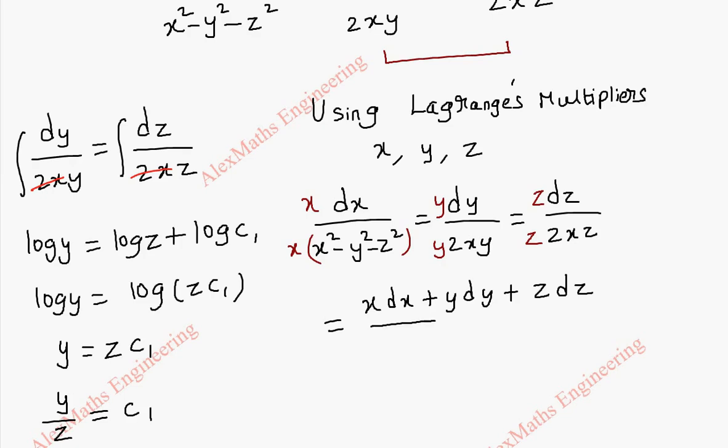Now using the ratio property we can add all the numerators and write it as one term and we can add all the denominators. While adding I will expand this. This is x cubed minus xy squared minus xz squared plus second term is 2xy squared.